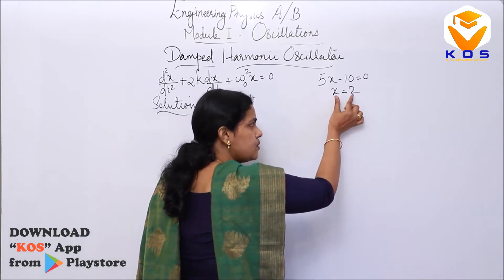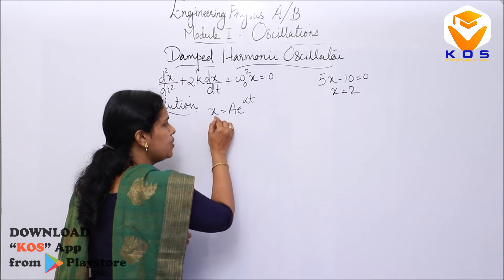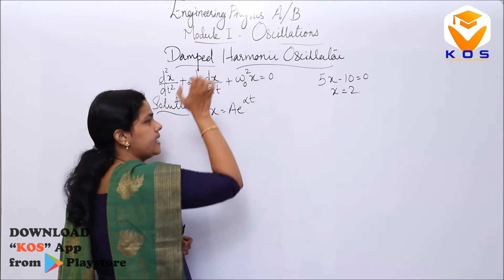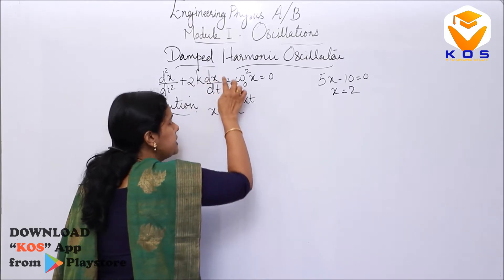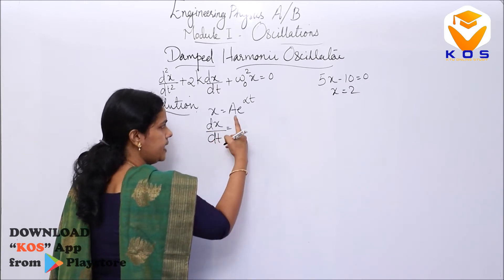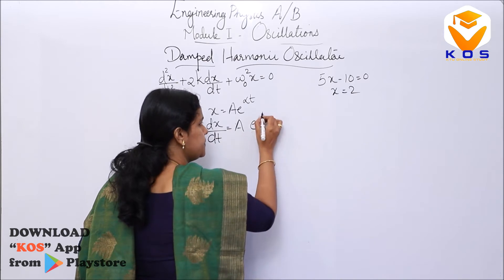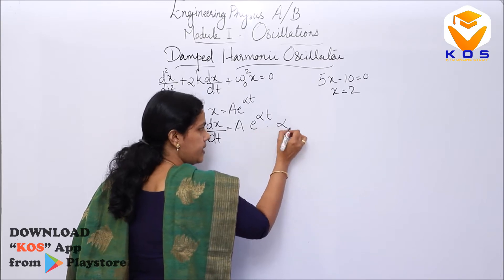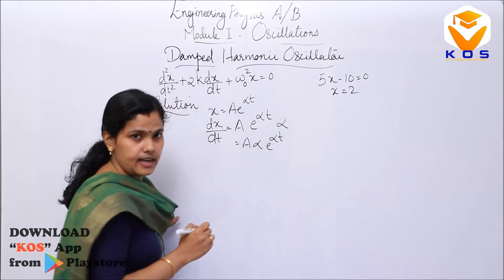Just as x equal to 2 satisfies the algebraic equation when substituted, here we substitute x equal to A·e^(αt) into the differential equation. For dx/dt, differentiating A·e^(αt) gives A·α·e^(αt), since a constant times an exponential differentiates by bringing down α.